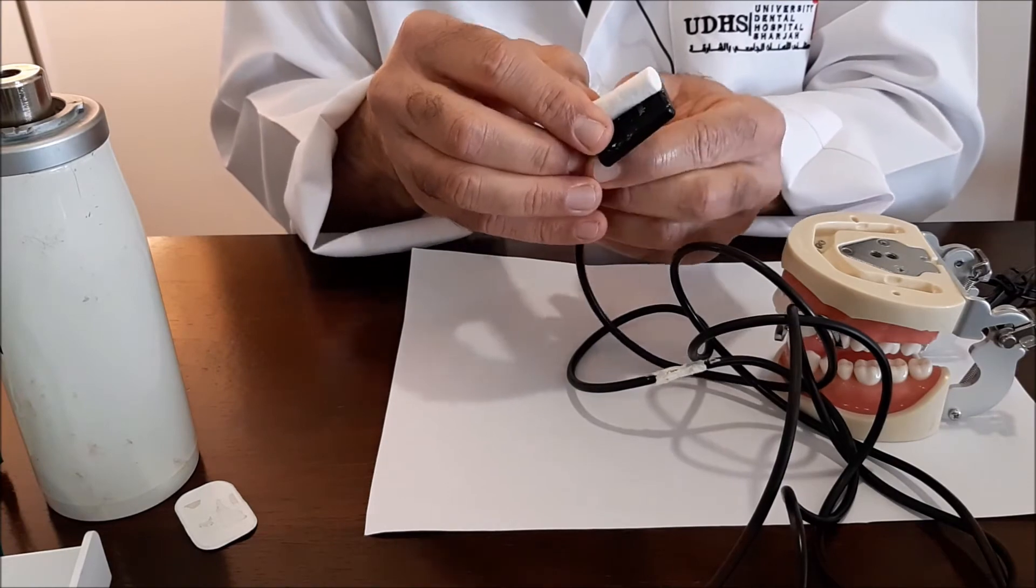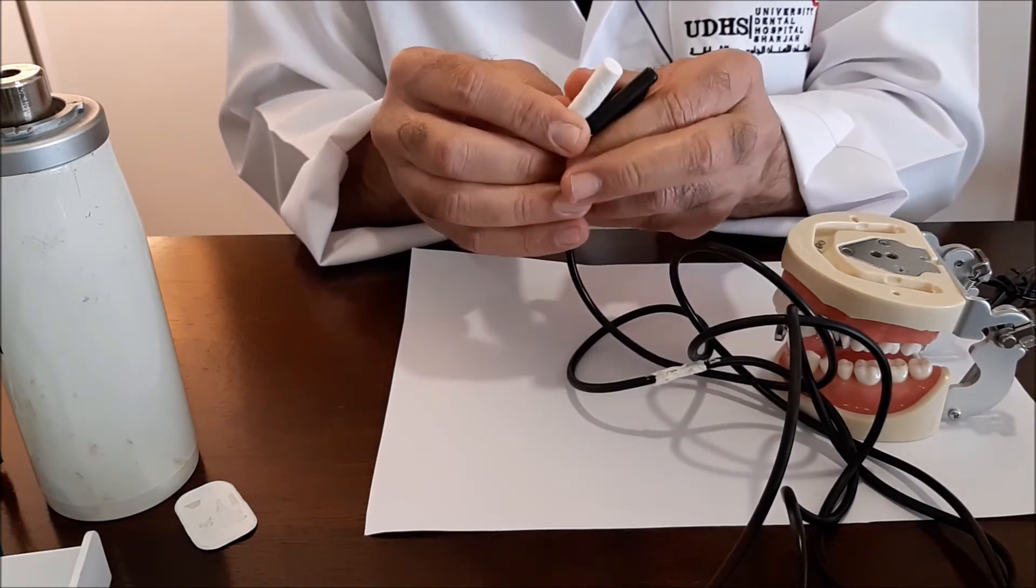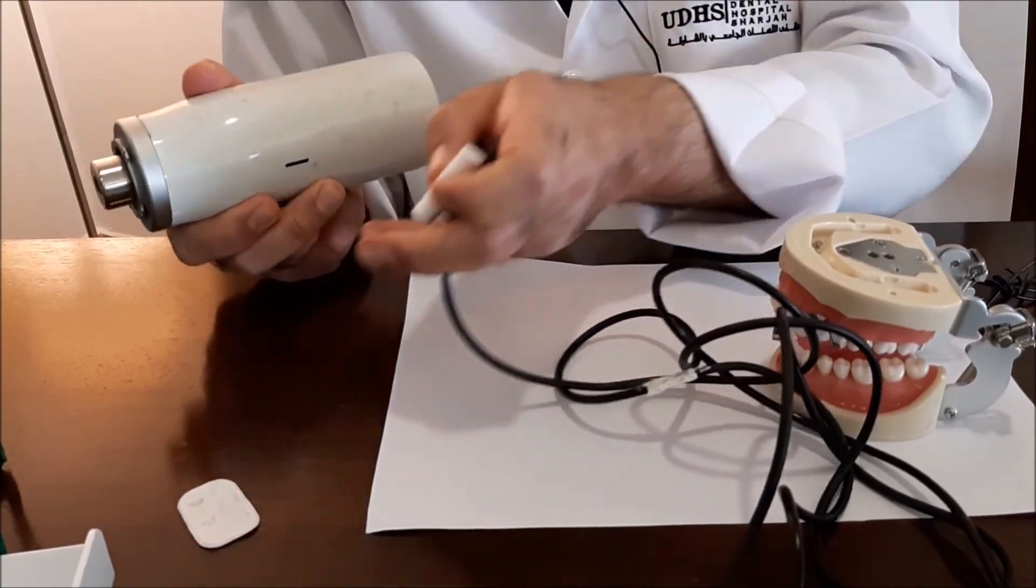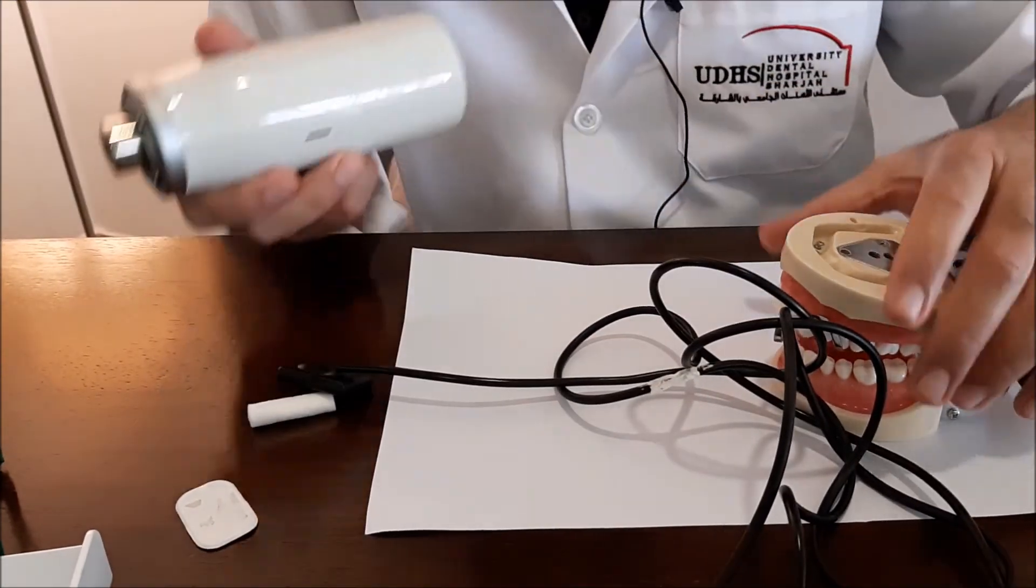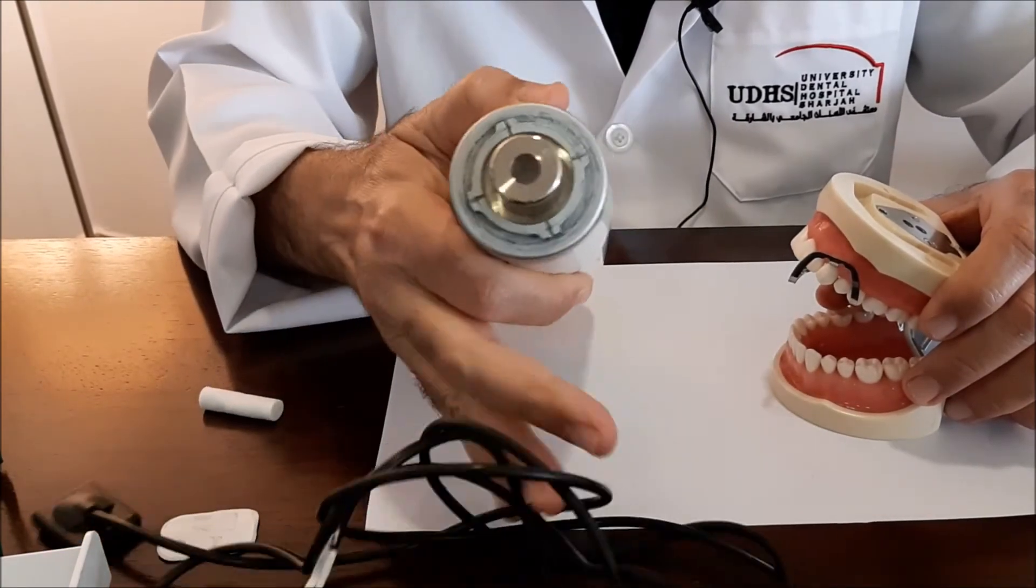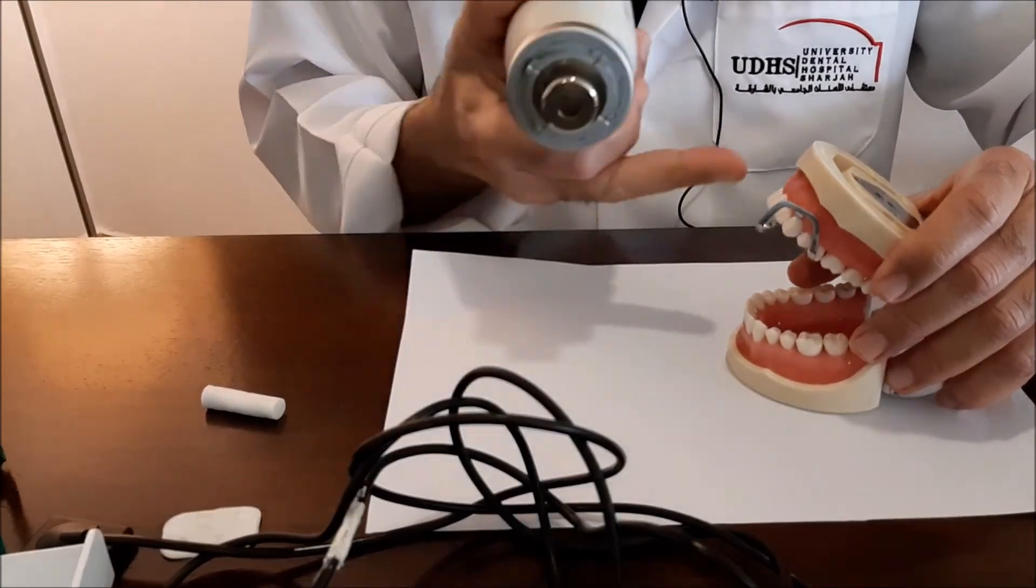When you place a cotton roll, you are going to reduce it so that you will compensate by the movement according to the angle which is formed between the tooth and the sensor.